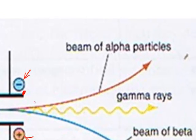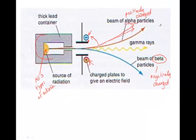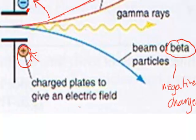The alpha particles are positively charged, so they are attracted towards the negative electrode — opposites attract — and they deflect toward that side. The beta particles are electrons and are negatively charged, so they are attracted toward the positive electrode and deflect toward that side.